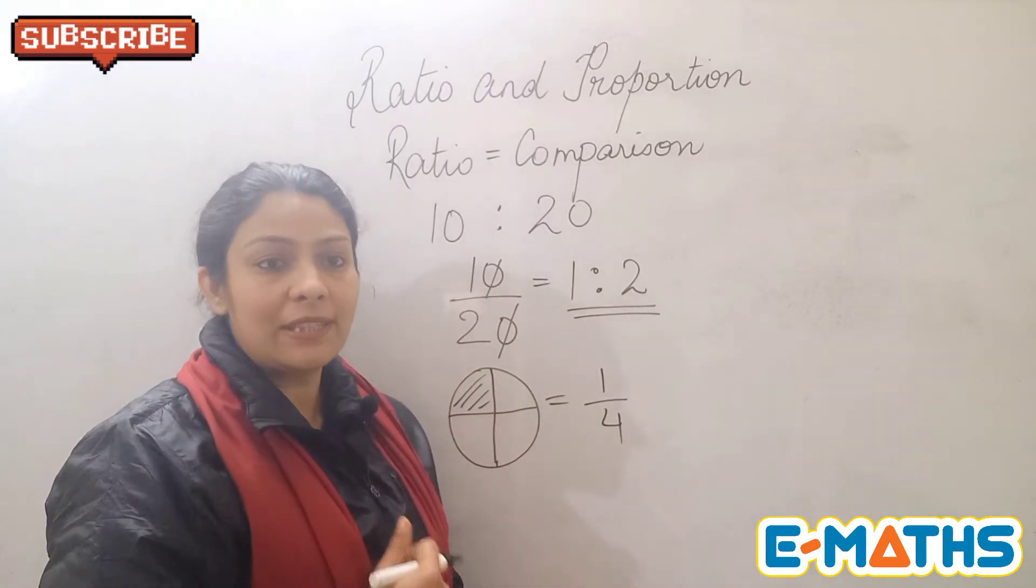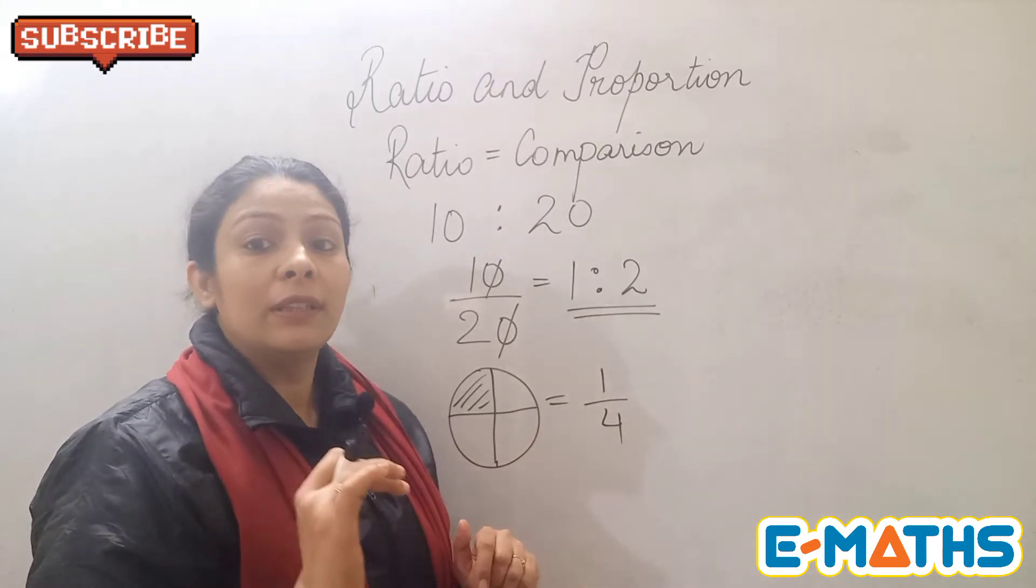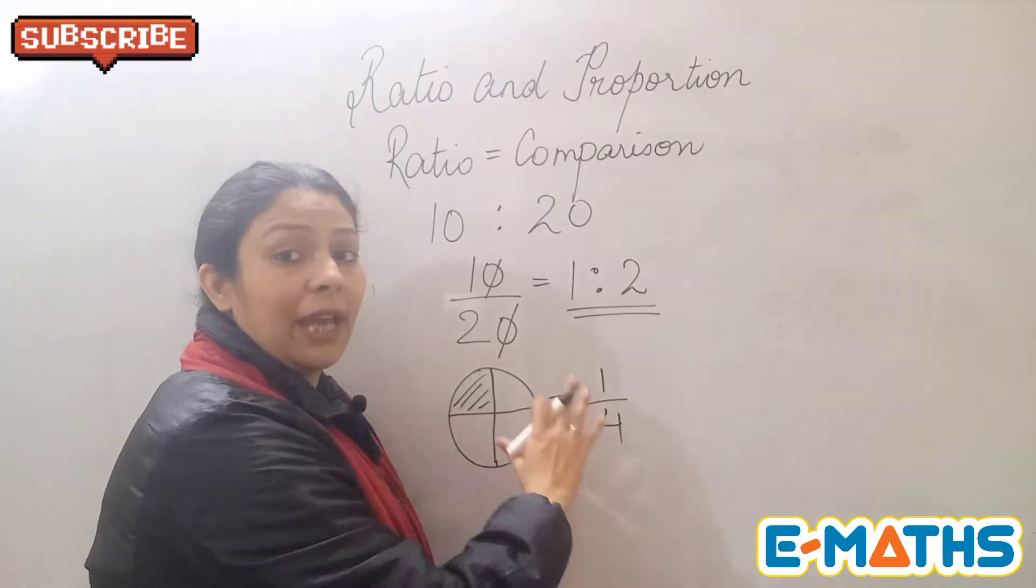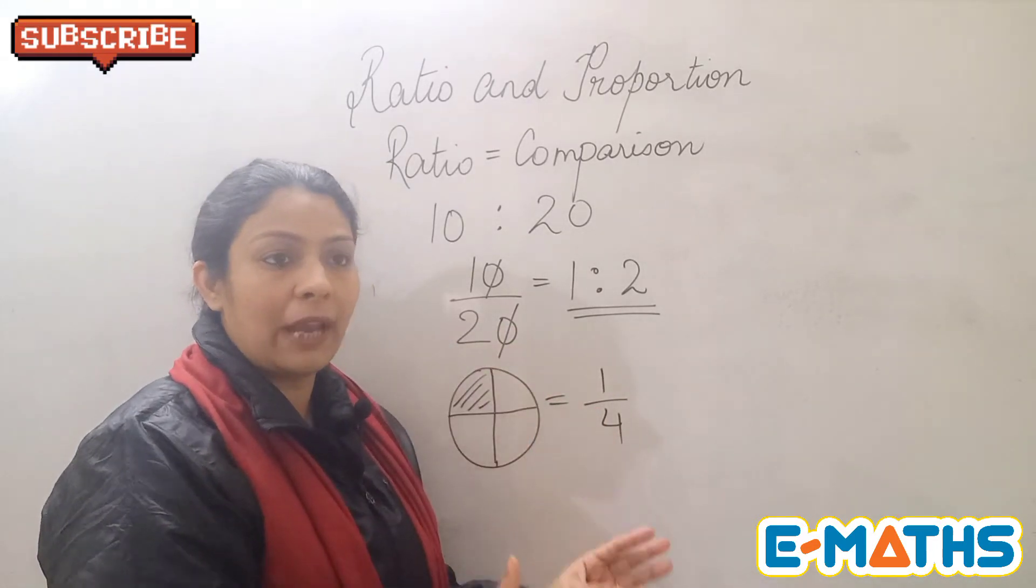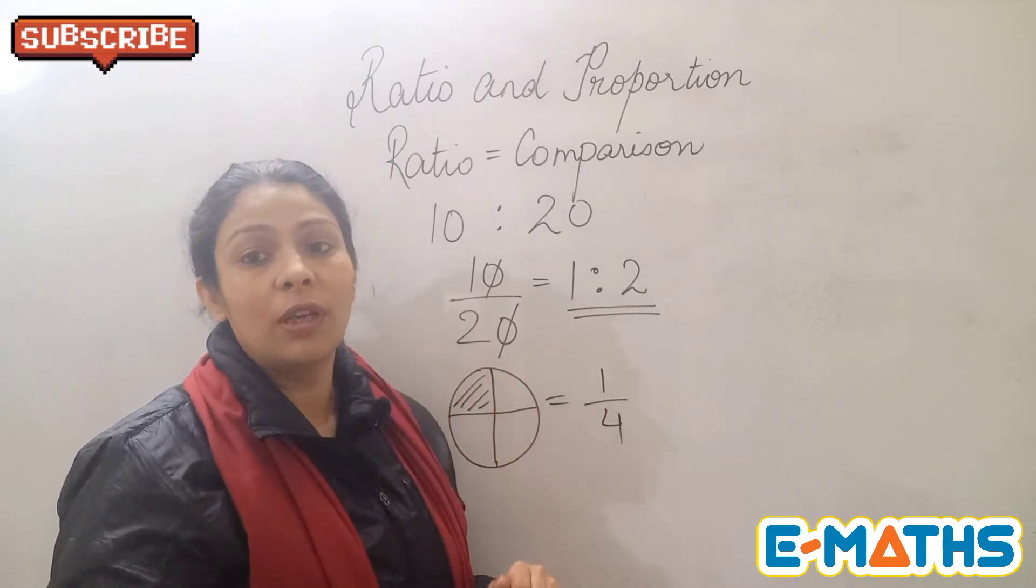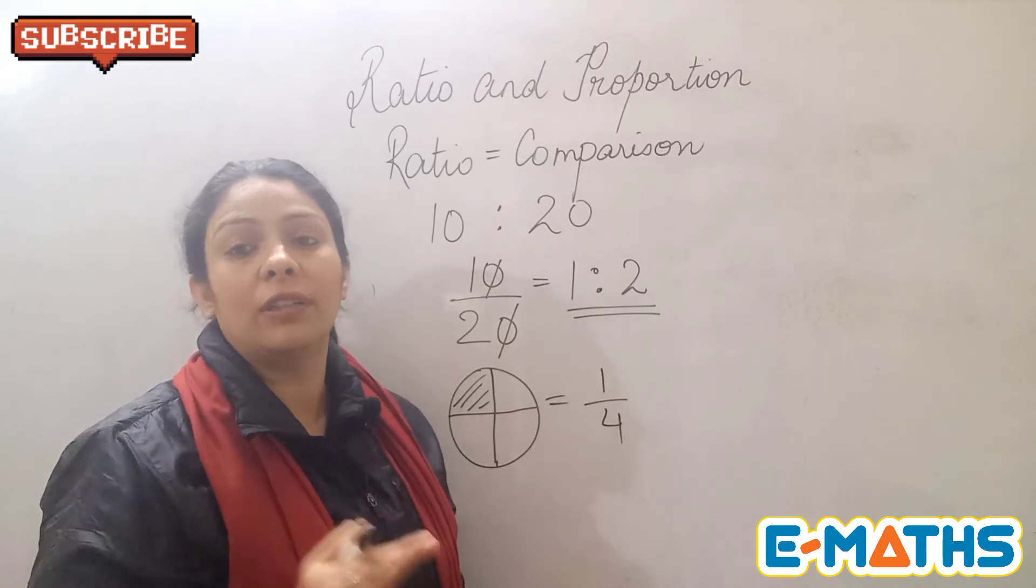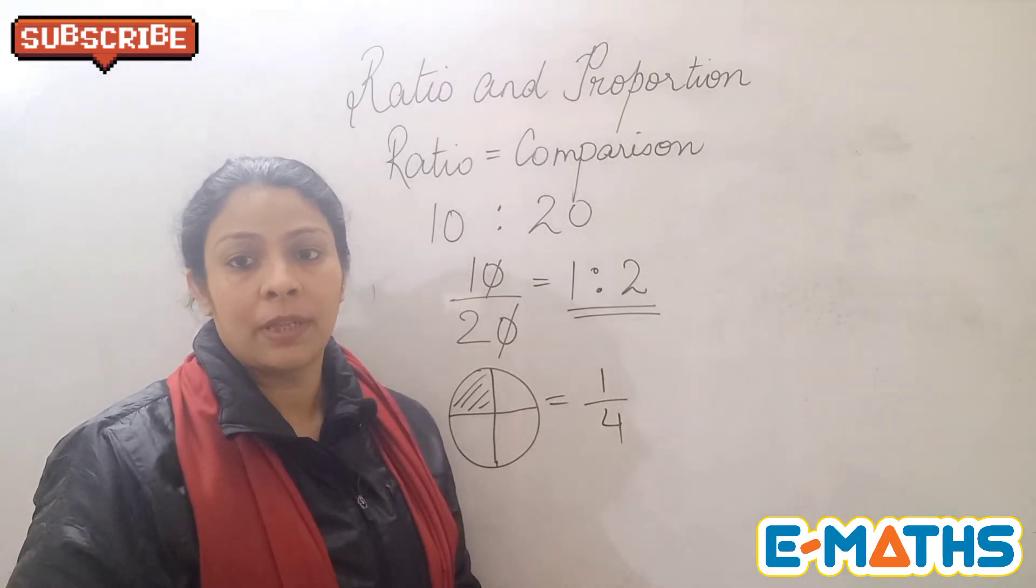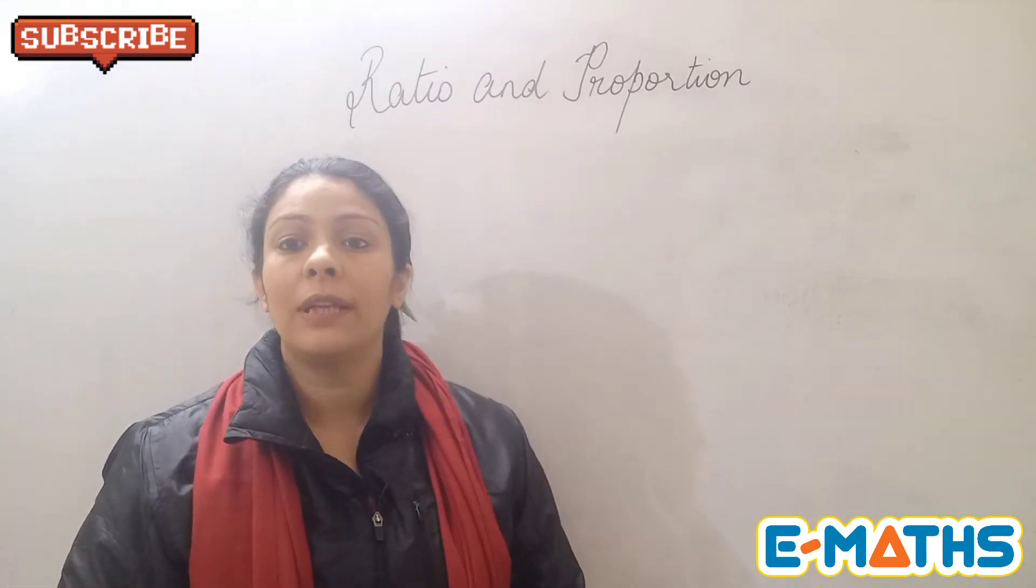Now if we take the same thing in terms of ratio, then I will say like suppose we are four persons. Then the same thing will be taken in terms of person. Like if there are four person and each has to get one piece, that means again it will be 1 is to 4, but it will be in respect of person and not the part of the pizza. This is how we can differentiate between ratio and fraction.